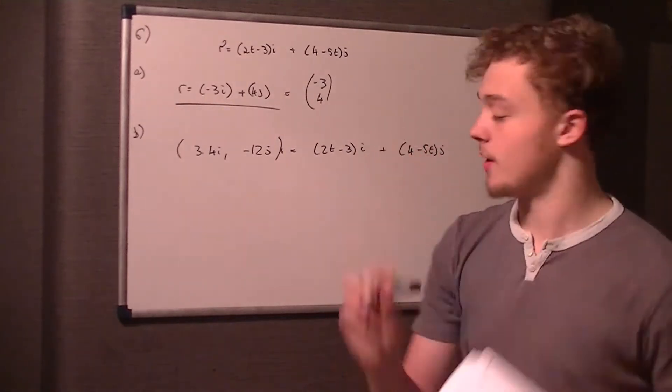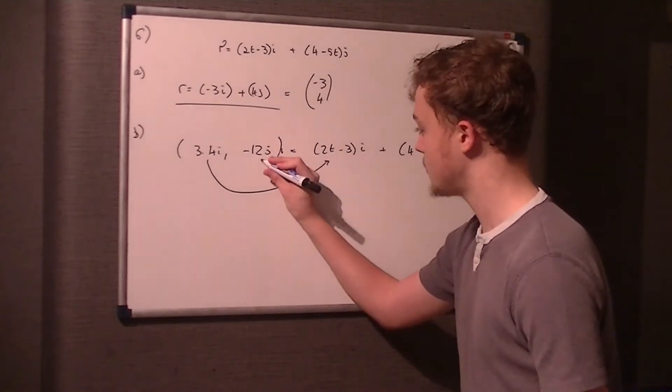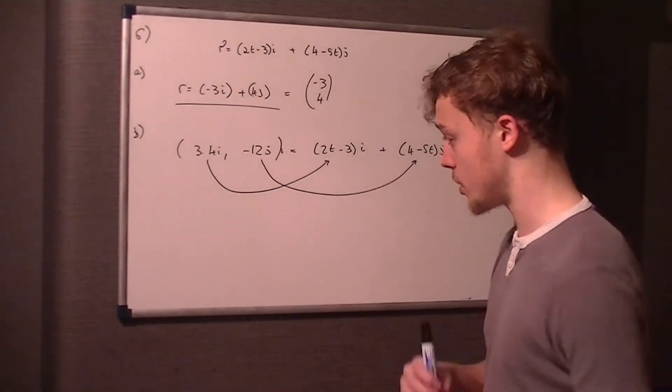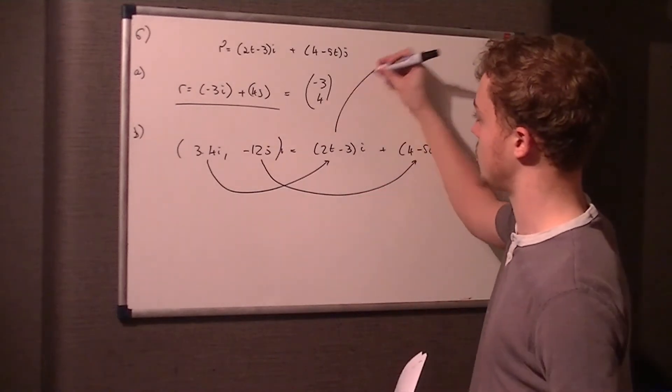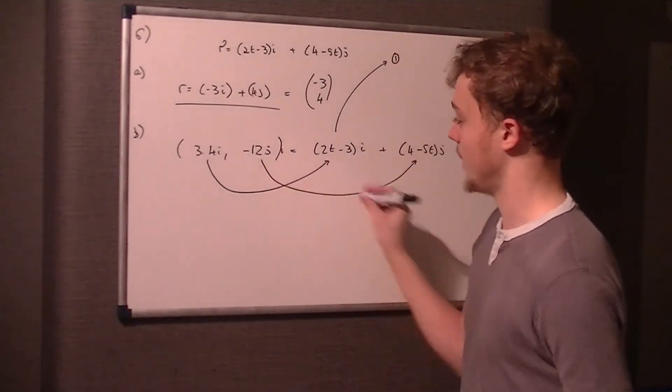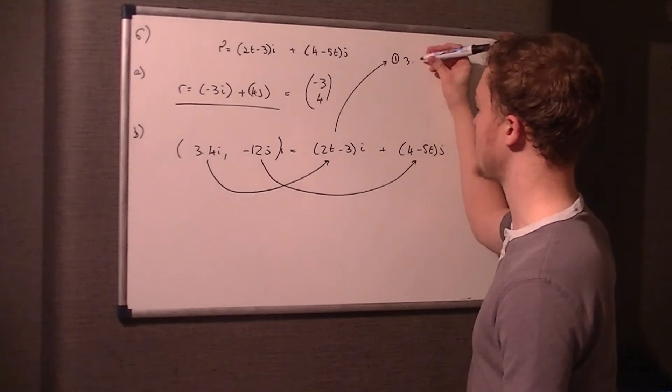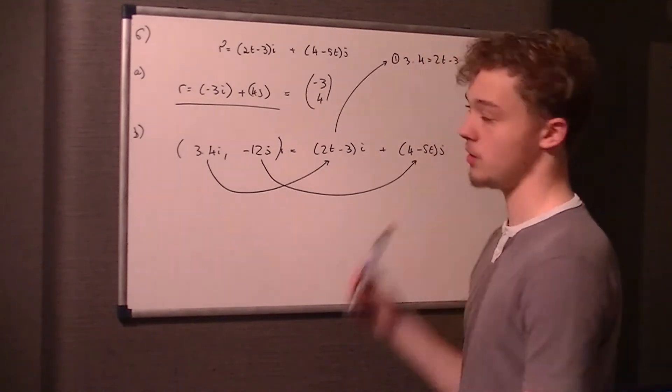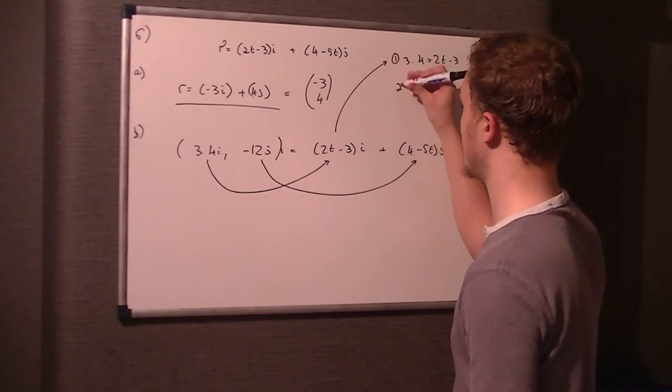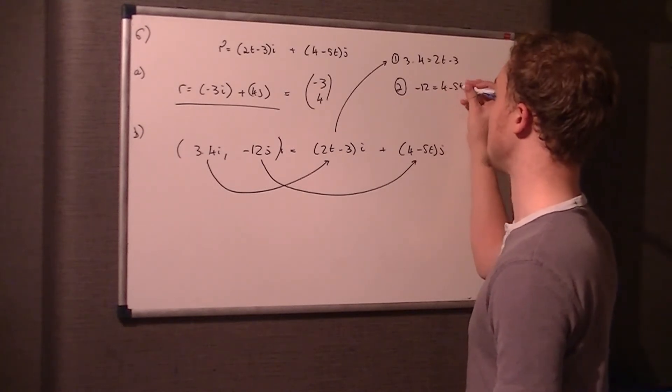Which is 2t - 3 in the i direction, and 4 - 5t in the j direction. So basically, it's just comparing, compare like for like. So this 3.4 must be equal to 2t - 3, and this -12 must be equal to 4 - 5t. So we've got two simultaneous equations, so it's just a case of substituting or simplifying. Let's just substitute here our two equations, so it's like for like. The 3.4 in the i direction must be equal to 2t - 3 in the i direction, so 3.4 equals 2t - 3. The second equation, we want to compare the j component, so the -12 must be equal to the 4 - 5t.